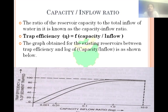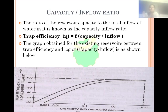Trap efficiency is equal to a function of capacity by inflow. The graph obtained for existing reservoirs between trap efficiency and the capacity inflow ratio is generally shown below. To measure the trap efficiency, a single logarithmic graph is used. In that, the x-axis is taken as the capacity inflow ratio on a logarithmic scale, and the y-axis, on the normal scale, is the trap efficiency. The graph is a curve shape, initially having a steep slope, after which it becomes stable.